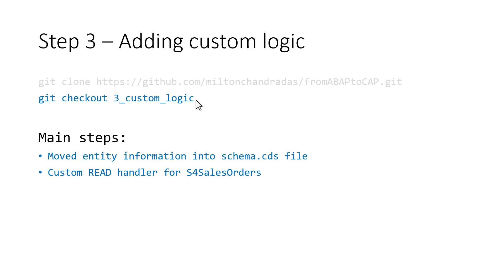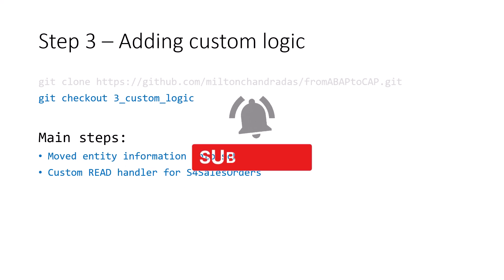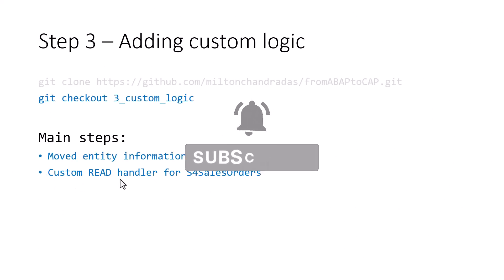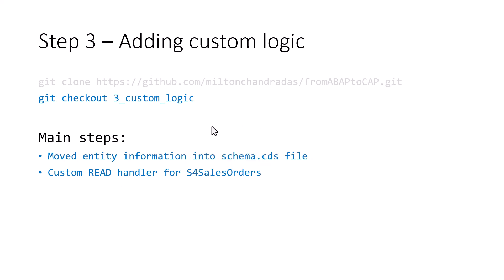If you want the finished version of this step, you can go ahead and check out version three. The main steps are: we are going to move the entity information into the schema.cds file — this is optional, just to clean up some of the code — and then we are going to implement the custom read handler for S4 sales orders.